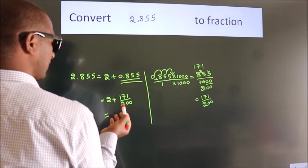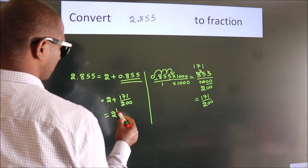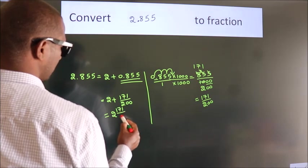2 plus 171 by 200. In mixed fraction it is 2 and 171 over 200.